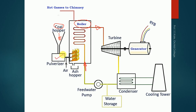The coal from the hopper goes down into the pulverizer, where solid coal is converted into powder form. That powder is then supplied to the burner. For burning the coal, air or oxygen is supplied, and the coal is burnt to generate high heat inside the boiler.